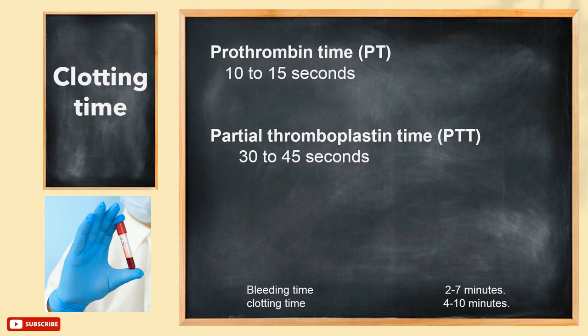Prothrombin time ranges from 10 to 15 seconds. A prolonged PT indicates deficiency in certain clotting factors, decreased prothrombin, fibrinogen, vitamin K, or can indicate liver disease. Partial thromboplastin time ranges from 30 to 45 seconds and can be used to diagnose patients taking anticoagulants like heparin. Bleeding and clotting times can also be measured on the spot without a lab test.